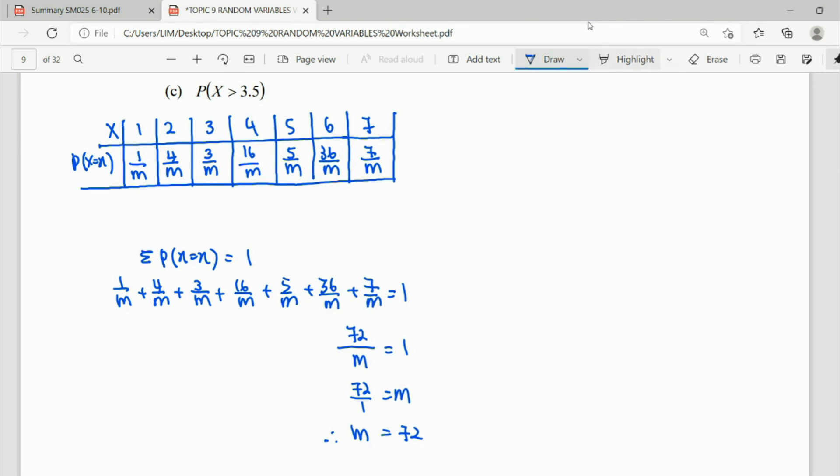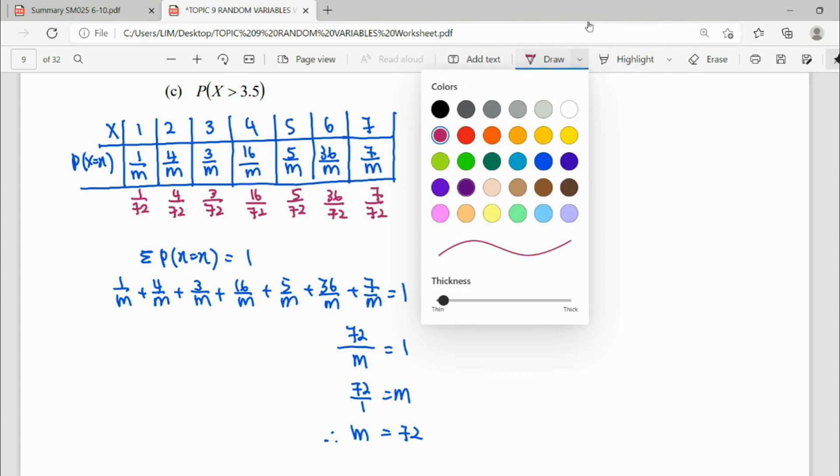So once we find our m is 72, we can figure out our probability already. This is 1 over 72, 4 over 72, 3 over 72, 16 over 72, 5 over 72, 36 over 72, 7 over 72.